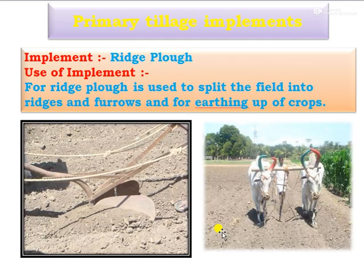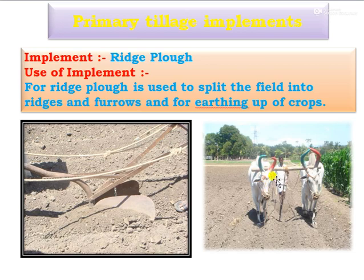Next one is the ridge plough. This is an iron ridge plough, which is specifically used for preparation of ridges, or to split the fields into ridges and furrows, and also for the ridging operation. This is operated for the preparation of ridges and furrows.